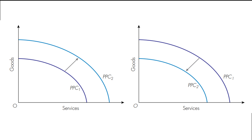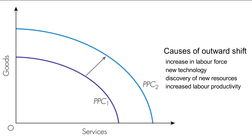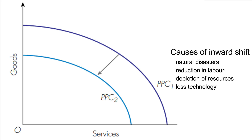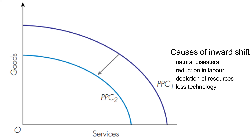We can have outward shifts and inward shifts. Causes of outward shifts include: an increase in the labor force by encouraging birth and immigration, new technology and production methods, discovery of new resources such as oil fields, and increased labor productivity due to training or education. Causes of the inward shift include: natural disasters such as floods and earthquakes, reduction in labor due to emigration and death of population, depletion of resources, and slow replacement of old machinery and reduced investment in new technology, which reduces production capacity.